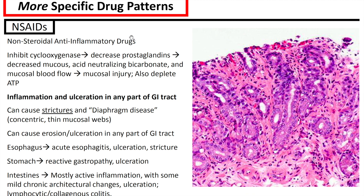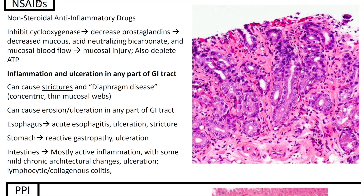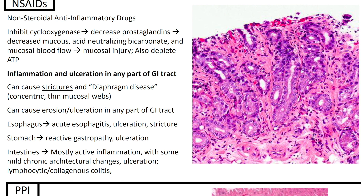Some more specific drug patterns: with NSAIDs, or non-steroidal anti-inflammatory drugs, they inhibit cyclooxygenase, which decreases prostaglandins, leading to decreased mucus, acid-neutralizing bicarbonate, and mucosal blood flow, causing mucosal injury and ATP depletion. This leads to inflammation and ulceration in any part of the GI tract, and can cause strictures and diaphragm disease. In the esophagus it can lead to acute esophagitis; in the stomach, reactive gastropathy with corkscrew glands or ulceration; and in the intestines, active inflammation with mild chronic architectural changes, ulceration, and lymphocytic and collagenous colitis.